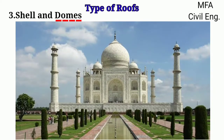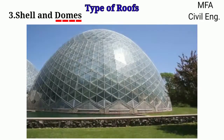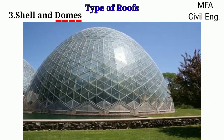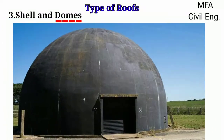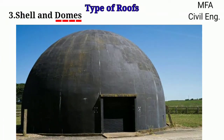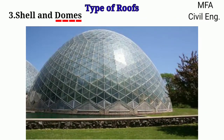Dome structures are generally used in monuments or as the roof of circular or hexagonal buildings. They have a very small thickness within a certain height-to-diameter ratio. Domes can be either smooth shell domes or ribbed domes.